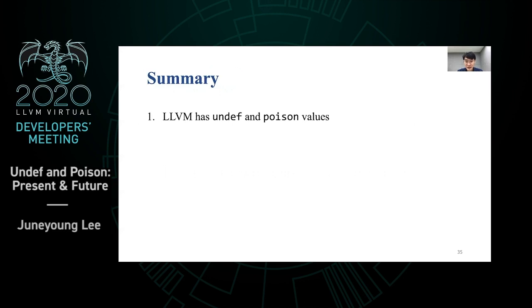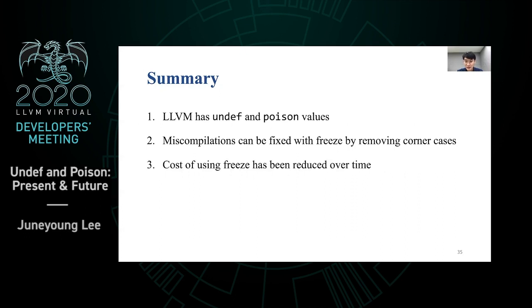This is the end of my talk. To summarize: LLVM has a notion of undef and poison values, and there have been miscompilations with respect to them. Freeze can fix them by removing corner cases. Using freeze can cause performance regression, but its cost has been reduced with patches. Finally, to make things simpler, it might be better to move towards removing undef and using poison only. Thank you for listening, and I thank many people who helped carry relevant patches into LLVM.